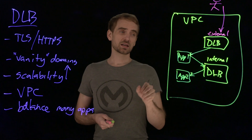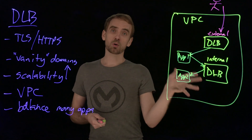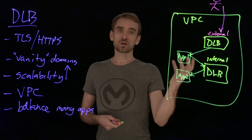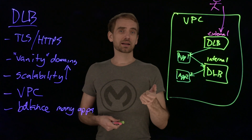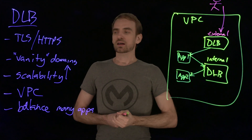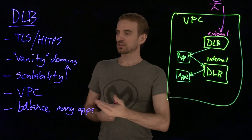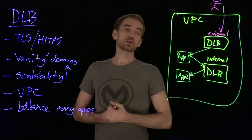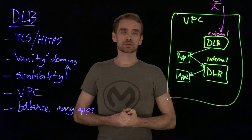Those are some of the considerations on how many DLBs match your organization's needs — one per VPC, two or more per VPC. You don't need one per application, and those are the advantages over using the shared load balancer.